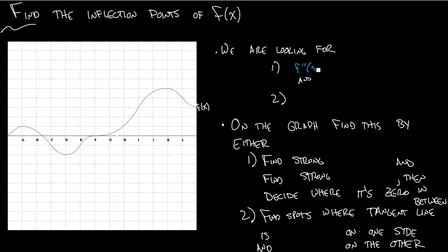we're looking for f double prime of x equal to 0 and f double prime of x changing sign. And what we'll focus on here, which will actually help us identify everything, is f double prime of x changing sign. So basically what I'm saying down here, this is the definition up here, but the way we're going to do this, find this definition on the graph is by looking for a strong concave up and looking for a strong concave down.